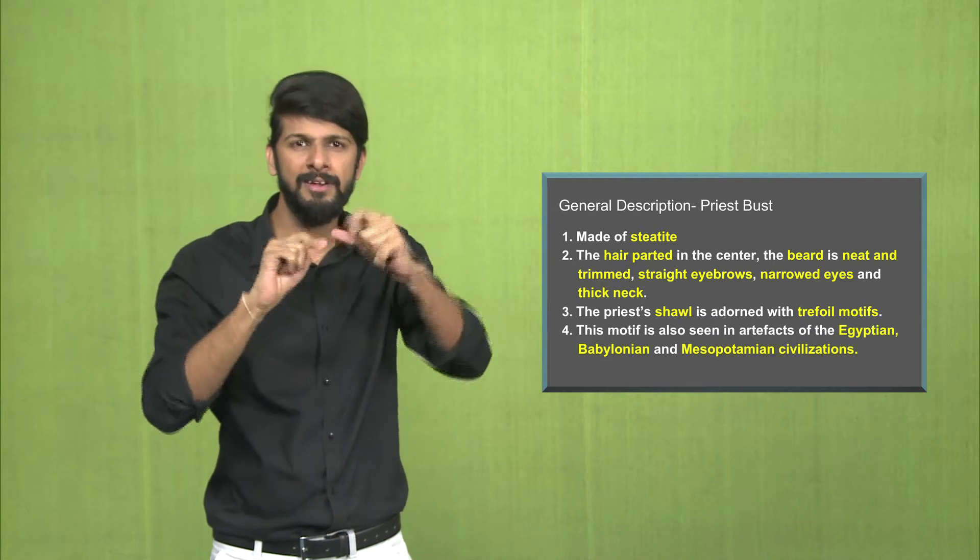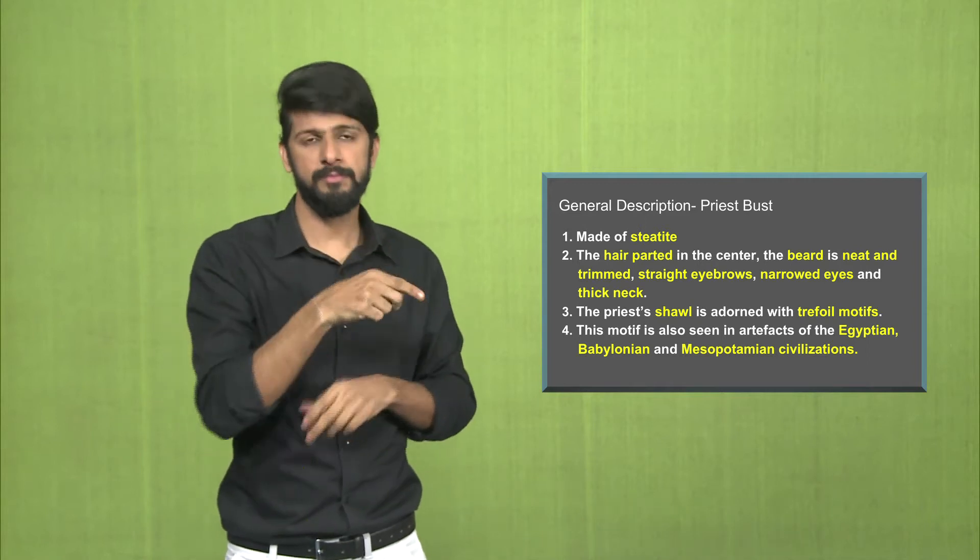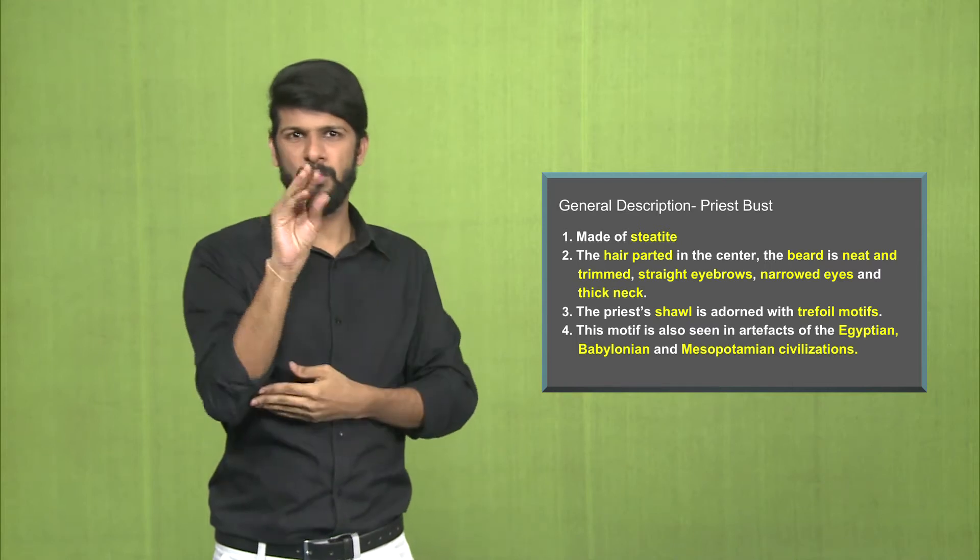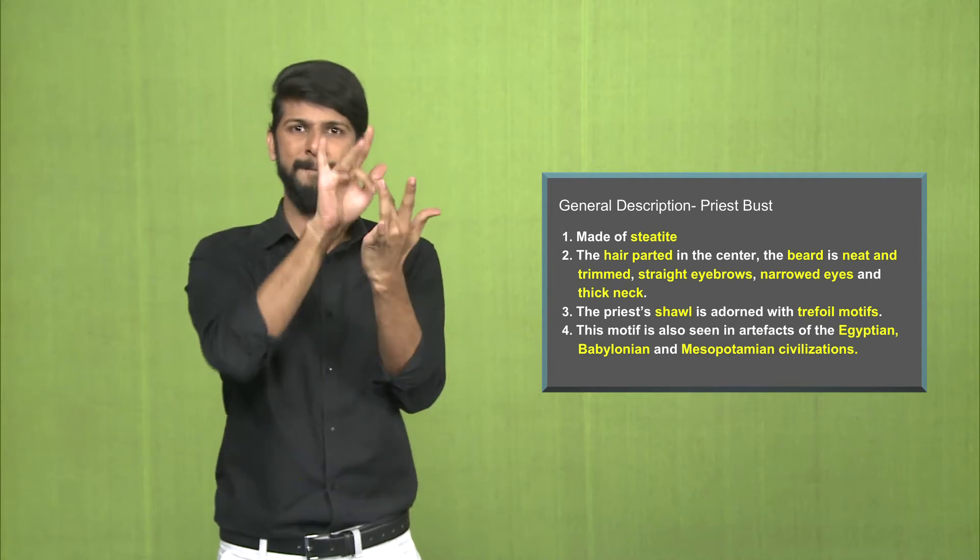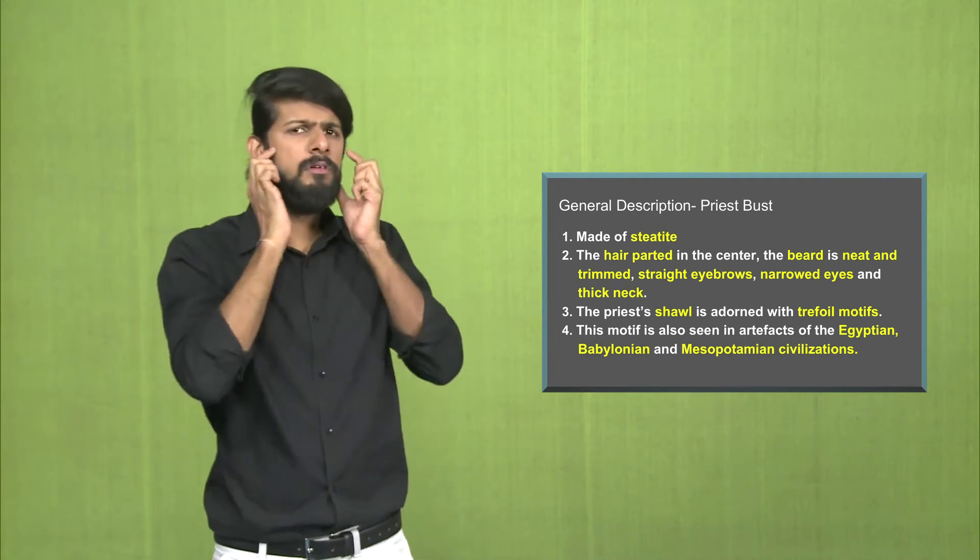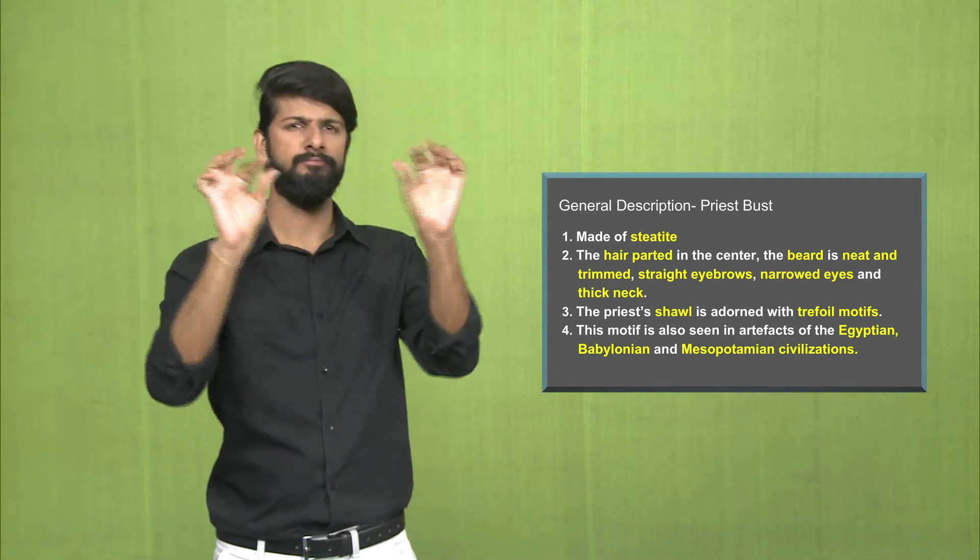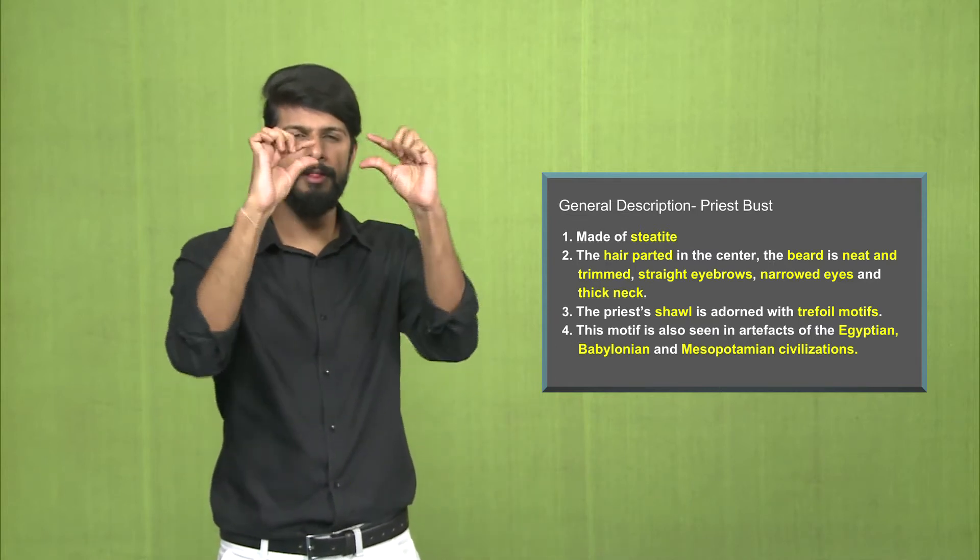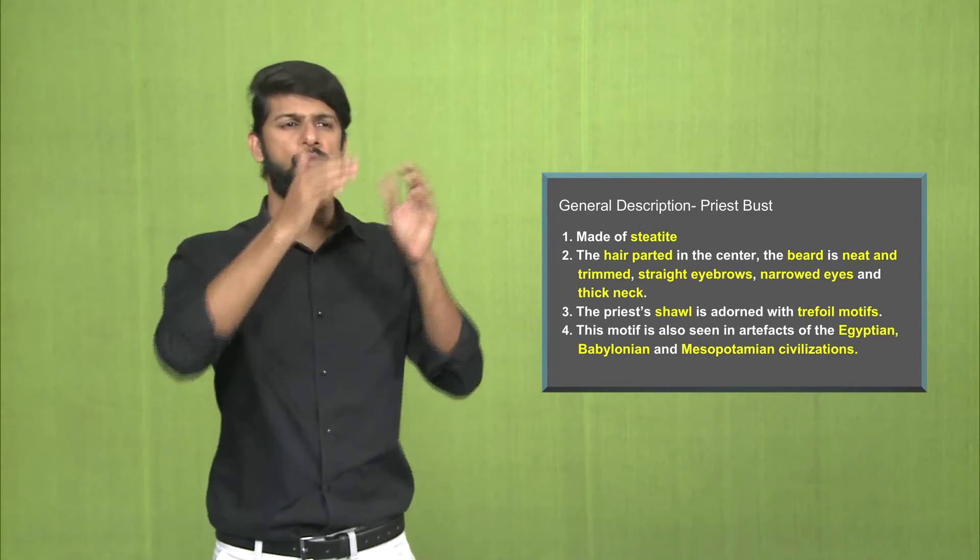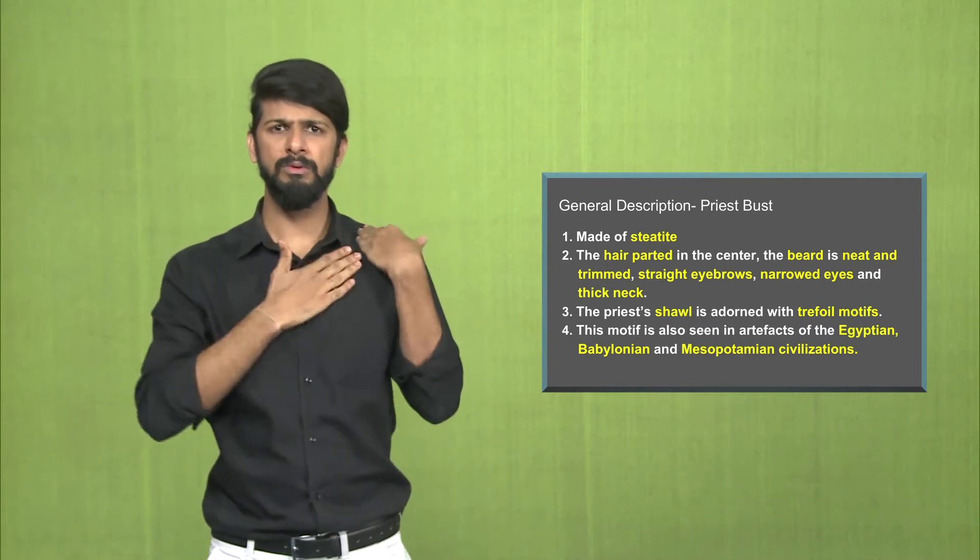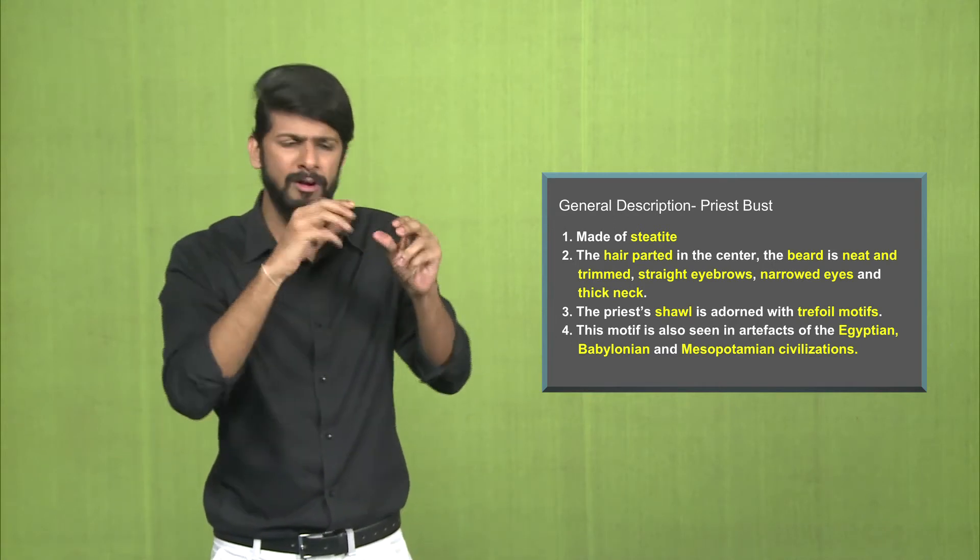Now we understand the description of the priest bust made of steatite stone. The priest has his hair parted in the center. The beard is neat and trimmed. The eyebrows are straight. The eyes are narrow. And the neck is thick.